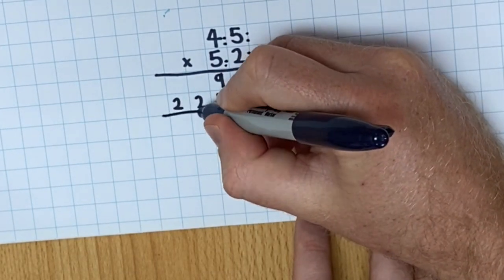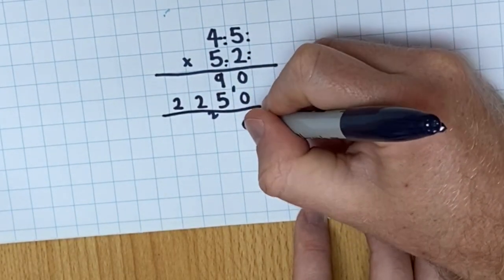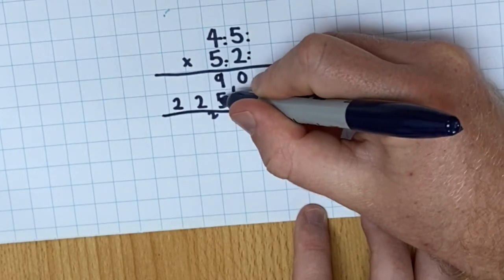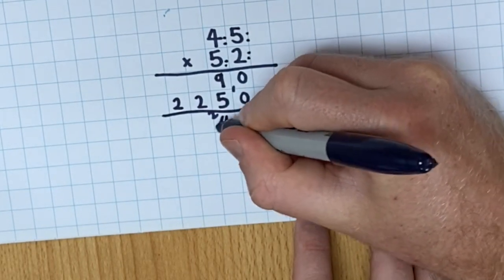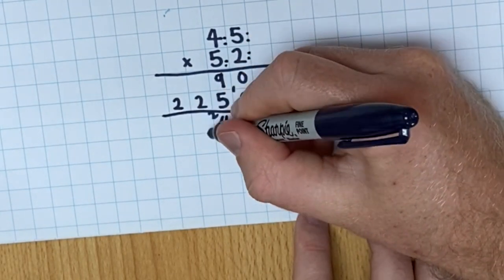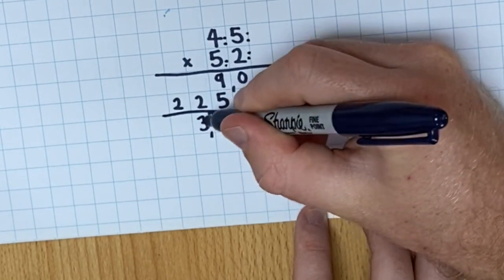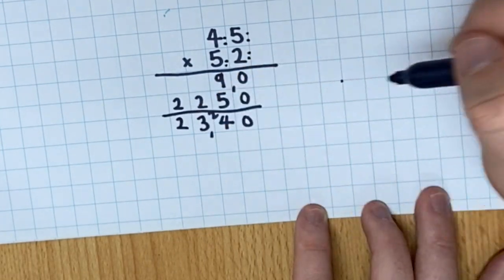Then if I add that up, 0 add 0 is 0. 9 add 5 is 14. 2 add 1 is 3. And 2 add nothing is 2.